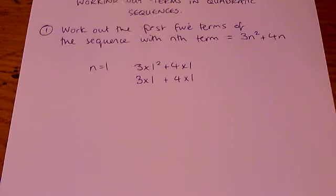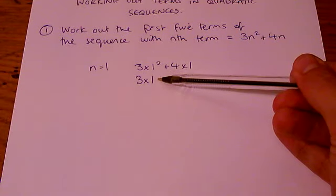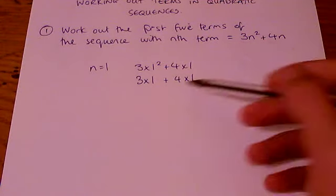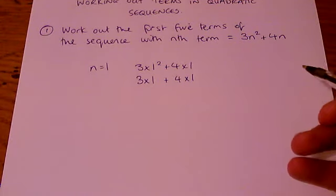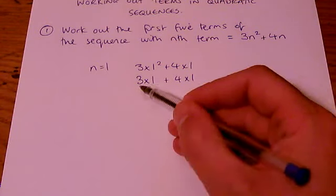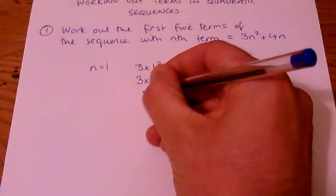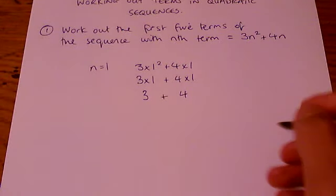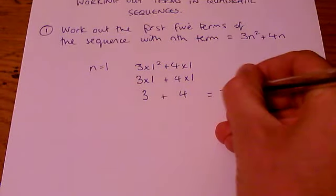So on the next line down, I've just replaced 1 squared with its answer. 1 squared is 1. Everything else stays the same. And now I need to do the multiplying here and here. So I get 3 plus 4. And my first term in a sequence is 7.